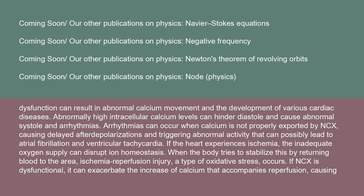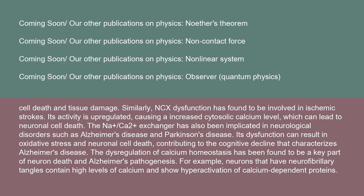Abnormally high intracellular calcium levels can hinder diastole and cause abnormal systole and arrhythmias. Arrhythmias can occur when calcium is not properly exported by NCX, causing delayed after-depolarizations and triggering abnormal activity that can lead to atrial fibrillation and ventricular tachycardia. If the heart experiences ischemia, the inadequate oxygen supply can disrupt ion homeostasis. When blood returns to the area, ischemia reperfusion injury — a type of oxidative stress — occurs. If NCX is dysfunctional, it can exacerbate the increase of calcium that accompanies reperfusion, causing cell death and tissue damage.